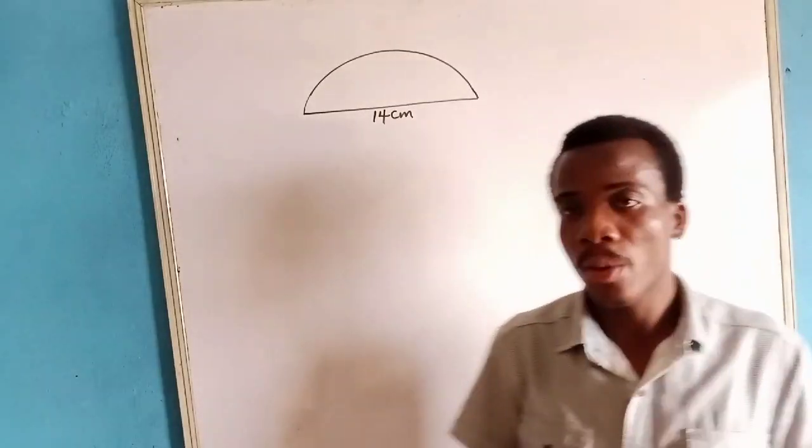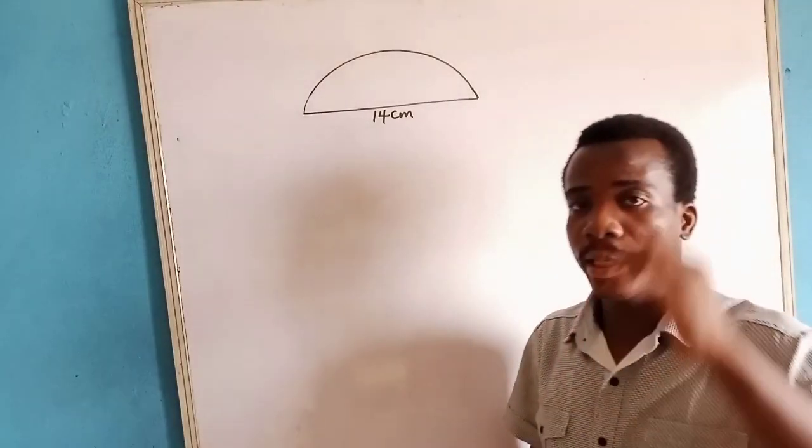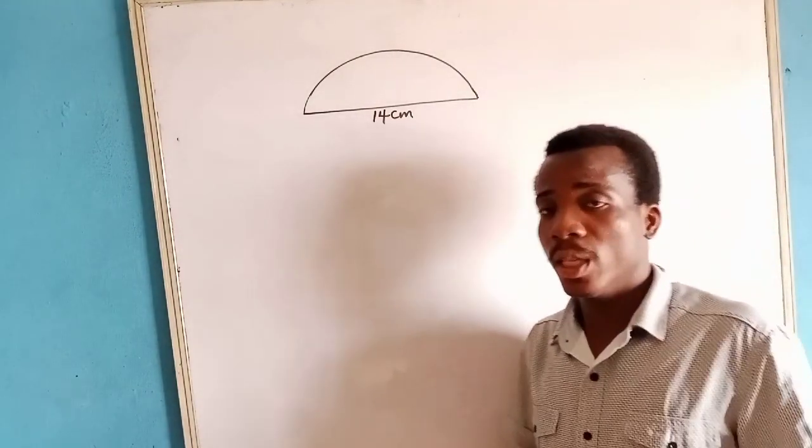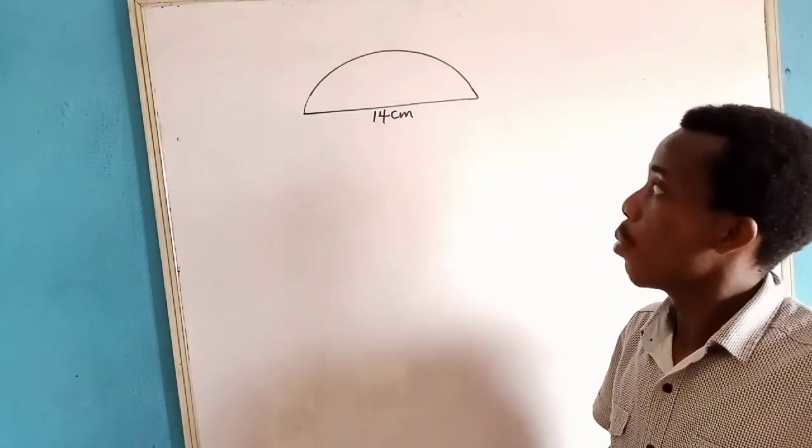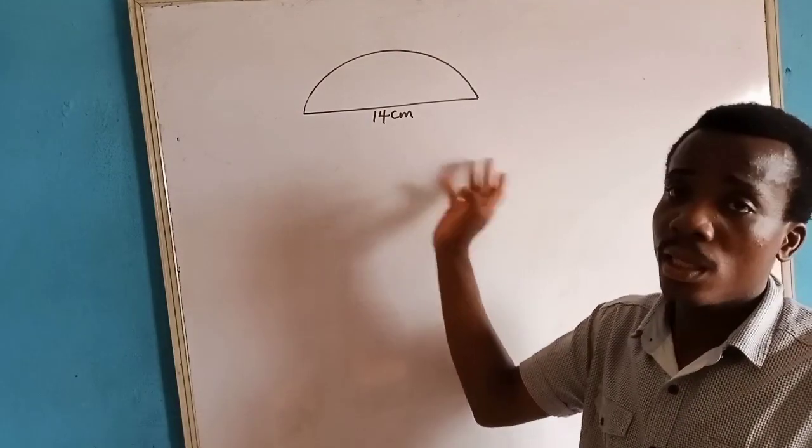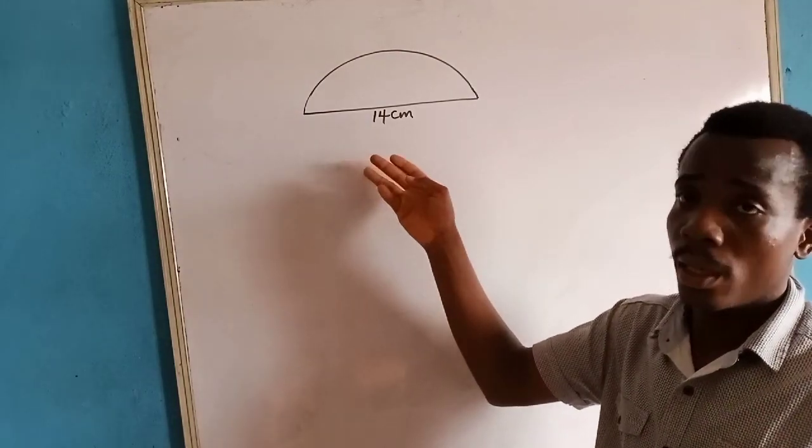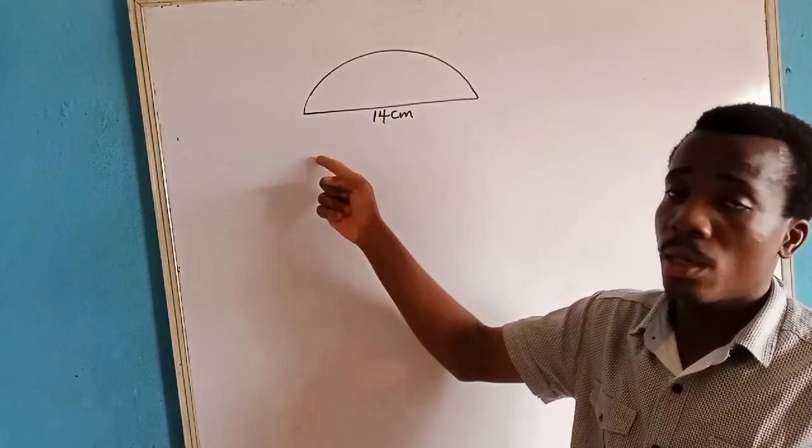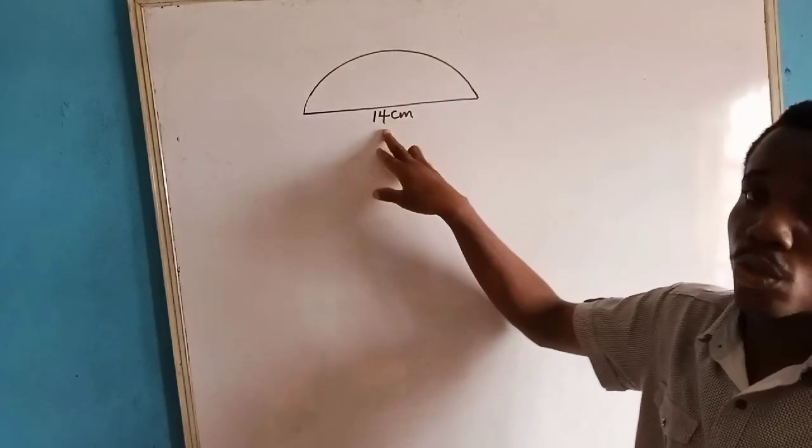In this lesson, we want to focus on how we can find the area of a semi-circle. A semi-circle is half of a circle, and when we divide half of a circle, we can see that this is a semi-circle. When we divide a circle, we have half, and we have the diameter to be 14.